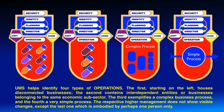The UMS helps identify four types of operations. The first, starting on the left, houses disconnected businesses. The second contains interdependent entities, or businesses belonging to the same economic subsector. The third exemplifies a complex business process. And the fourth, a very simple process. The respective higher management does not show visible changes, except the last one, which is embodied by perhaps one person only.